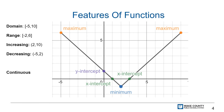Here is an example of a function with most of its key features labeled or described. You can see the domain, range, and intervals where the function is increasing or decreasing labeled to the side of the graph. You can also see that this is an example of a continuous function. Other key features are labeled on the graph itself.